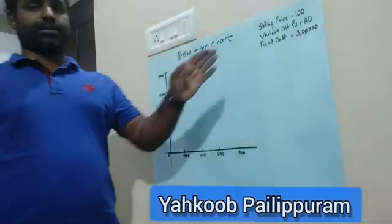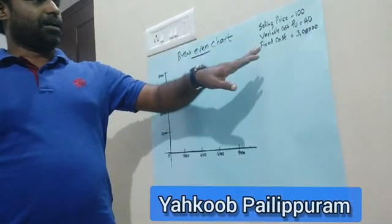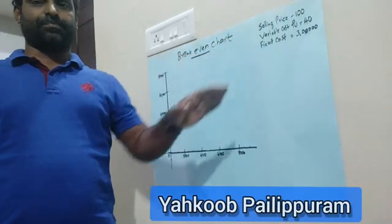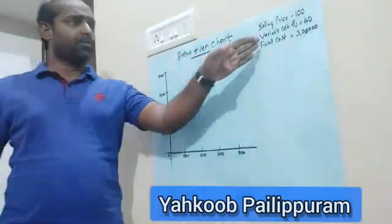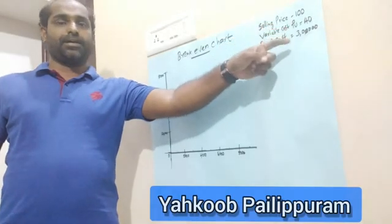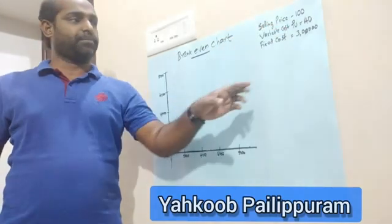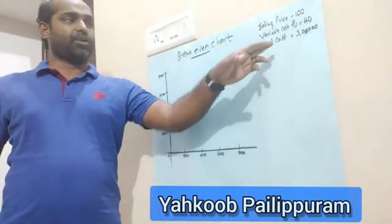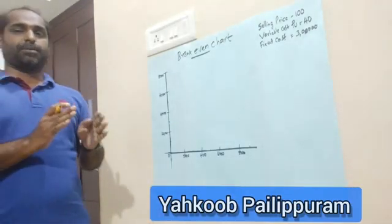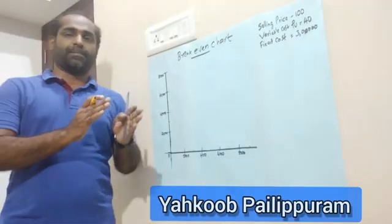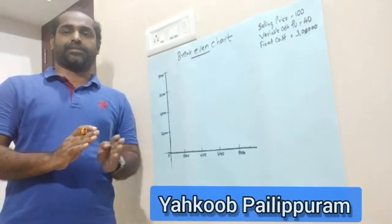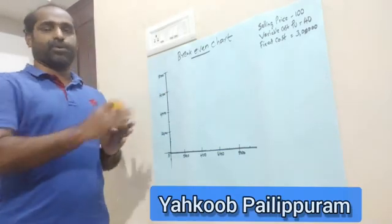Now I have a question. Selling price is Rs. 100, variable cost per unit is Rs. 40, fixed cost is Rs. 3,00,000. We need to find the break-even point in units and in rupees, and draw the graph.